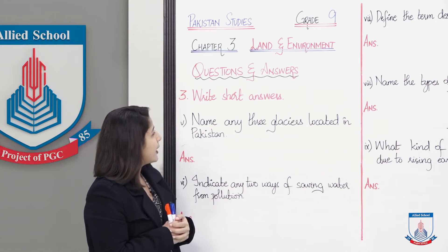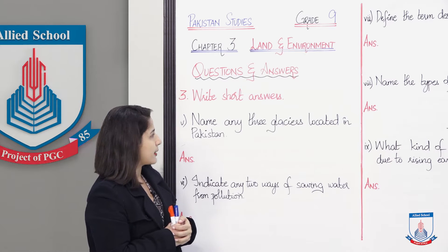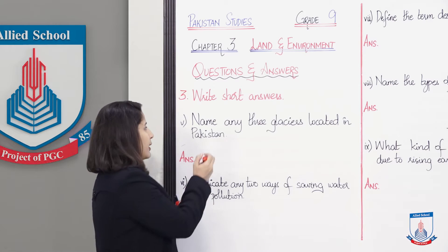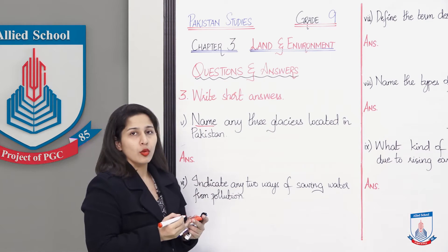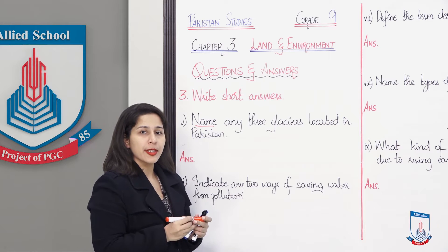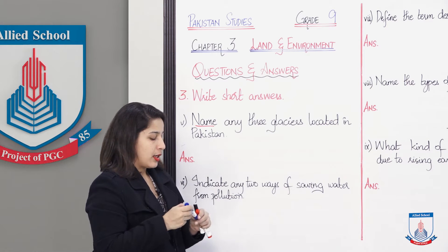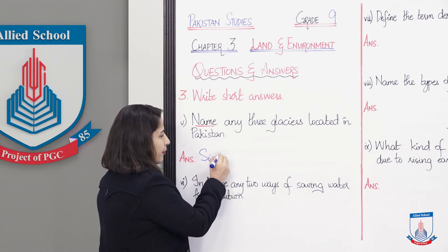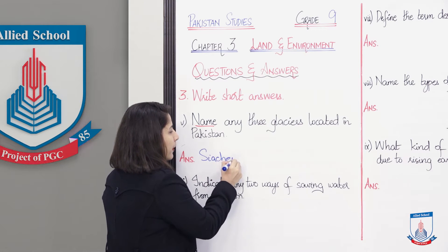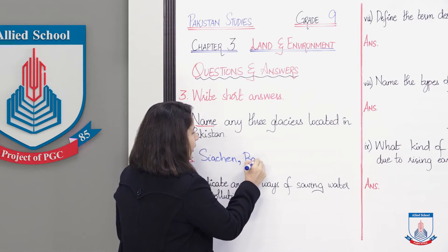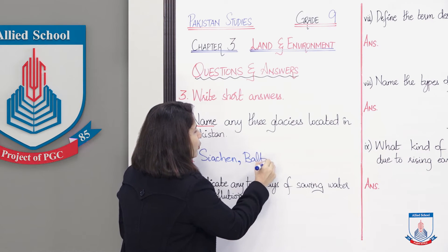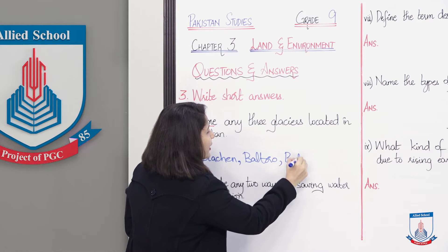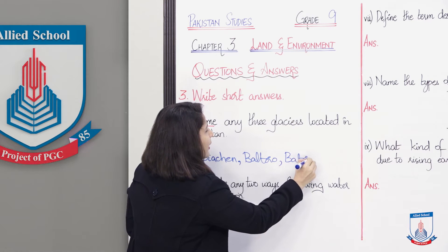Question number 5: Name any three glaciers located in Pakistan. We have to name any 3 glaciers of Pakistan. So Siachen, Baltoro, and Batura — there are more than this, many examples.